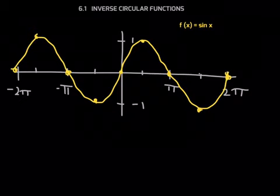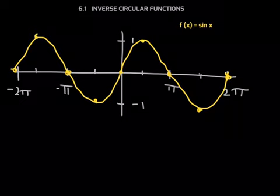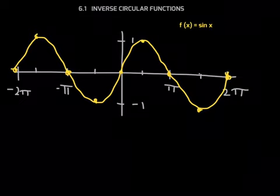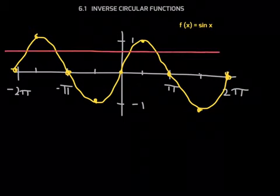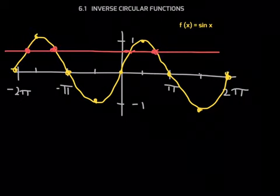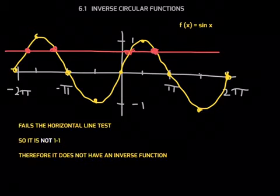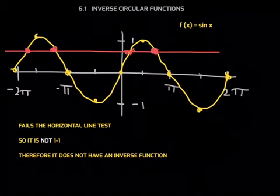Remember the horizontal line test? It says that if a horizontal line can be drawn through the graph of a function so that it intersects the graph more than once, then the graph is not the graph of a one-to-one function. For example, if I drew a horizontal line like this, it would cross definitely more than once — I'm highlighting the intersection points for you. So this fails quite miserably the horizontal line test. Because it fails, we know this function is not one-to-one, and therefore it does not have an inverse function.